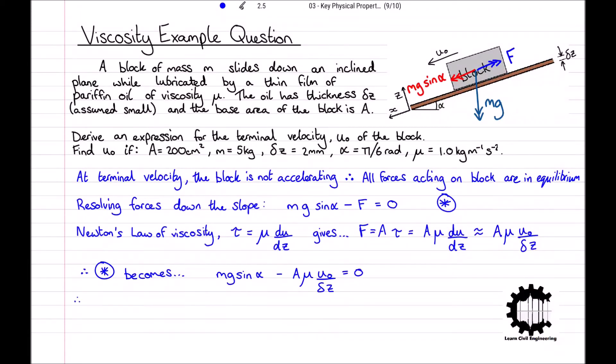Rearranging for the terminal velocity u0, we get u0 equals delta z times mg times sin alpha, all divided by A times mu. So that's the derived expression for the terminal velocity that the question initially asked for, but now let's try substituting in the values for the equation.